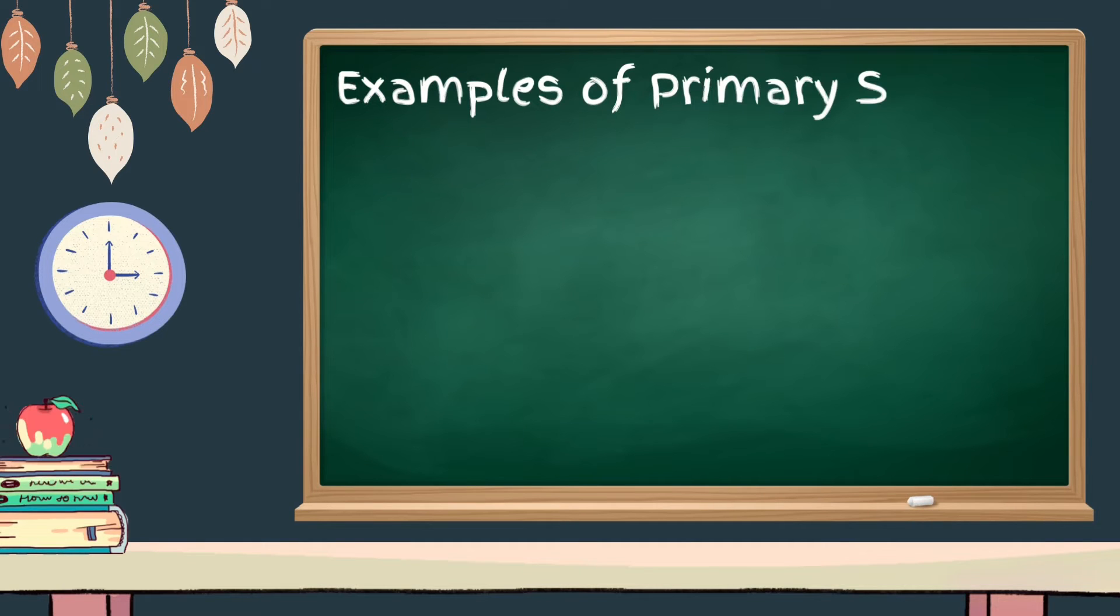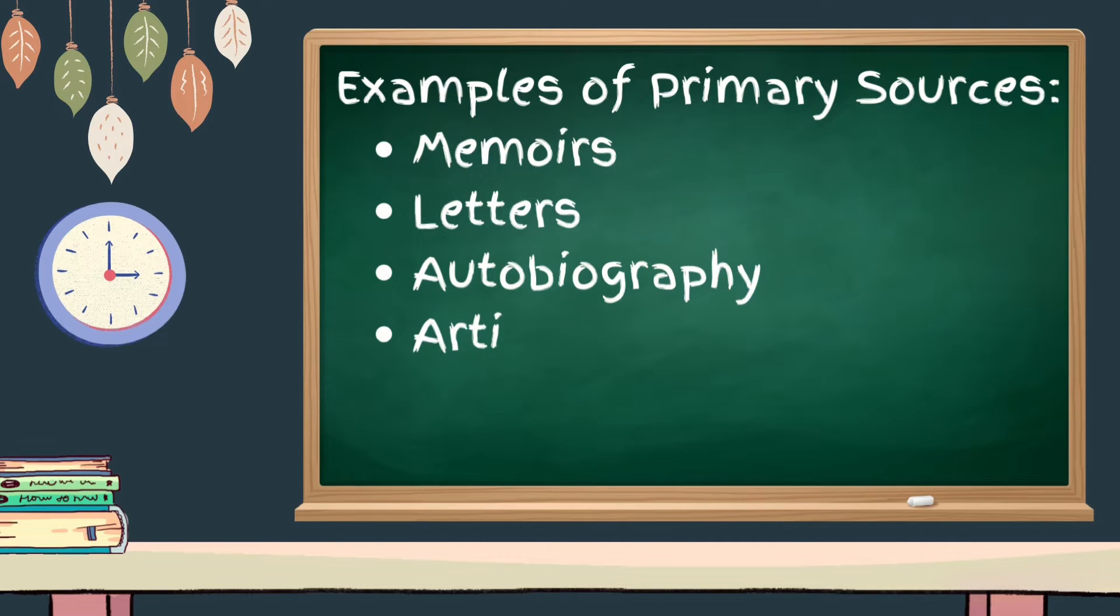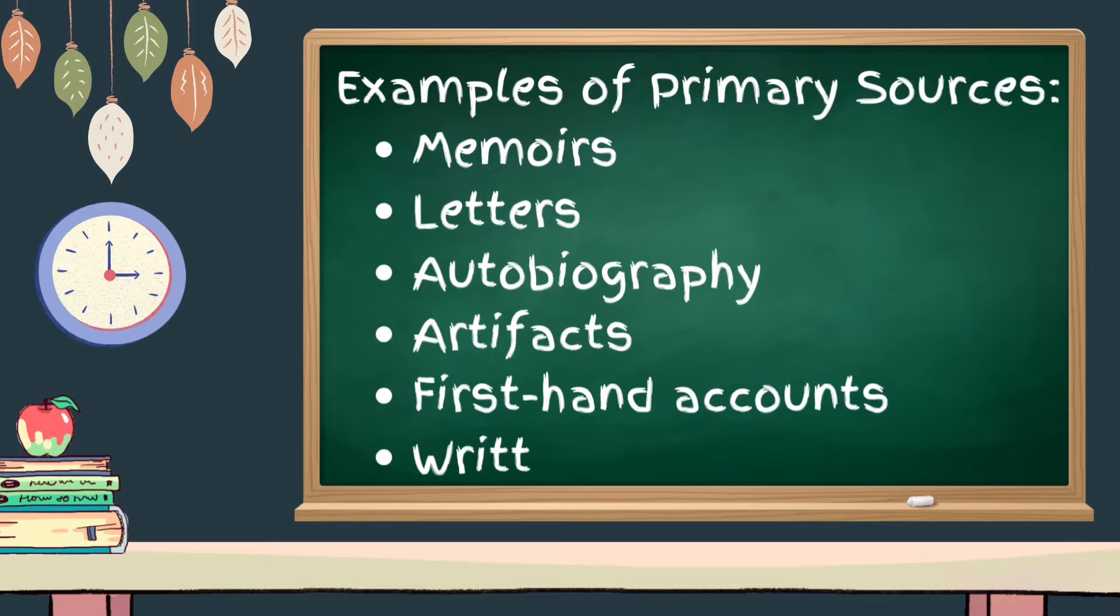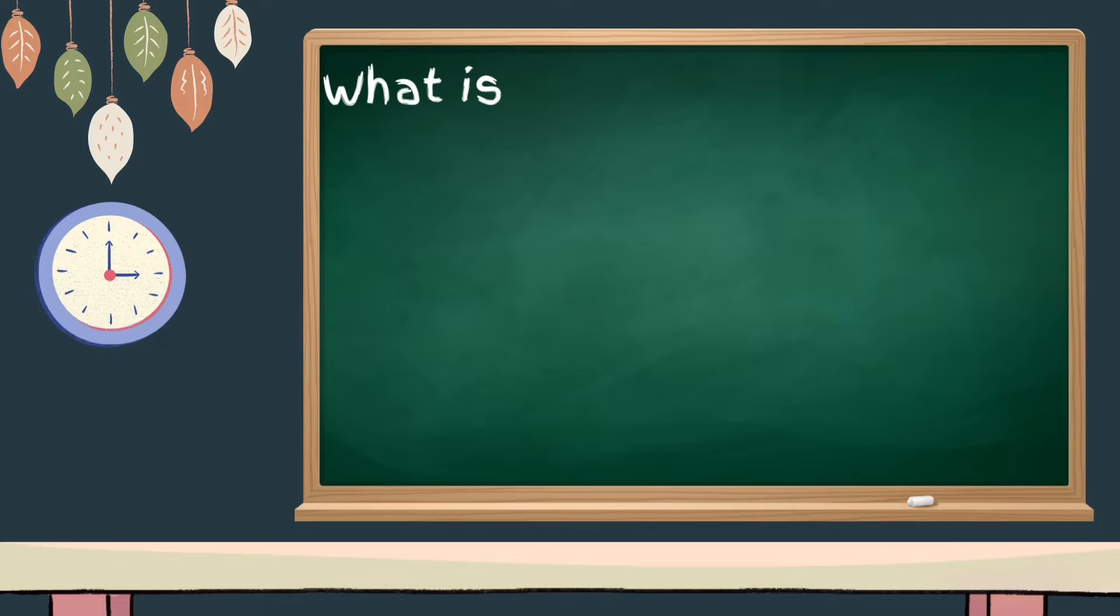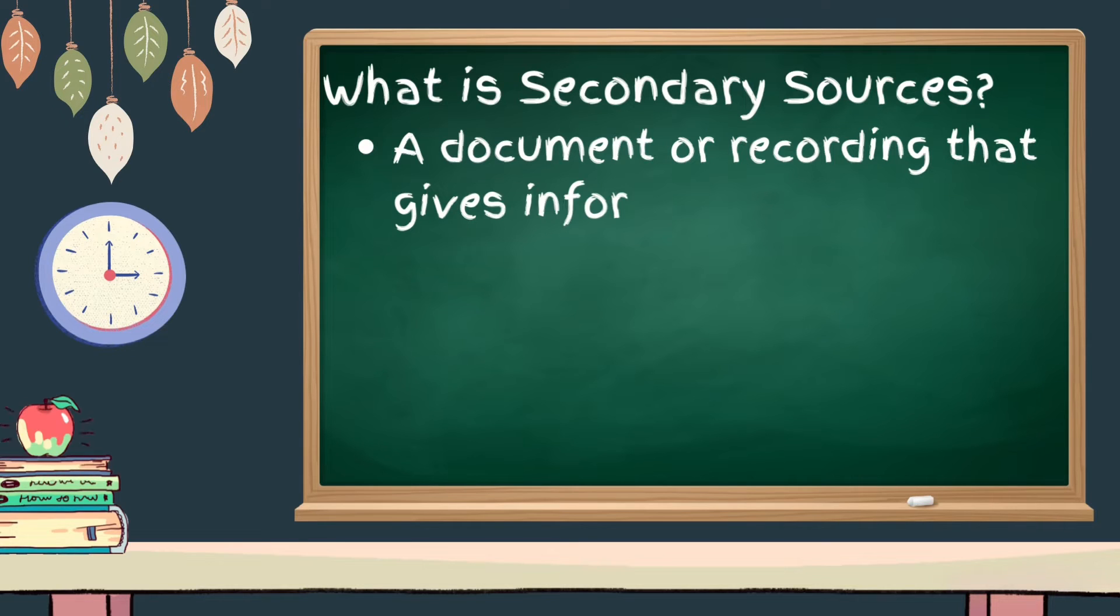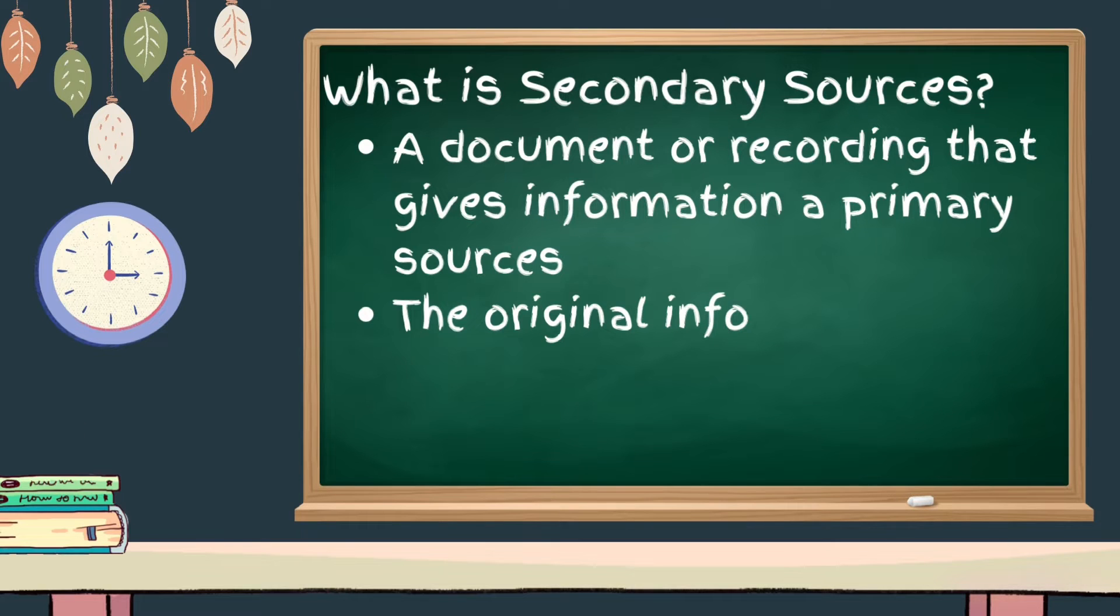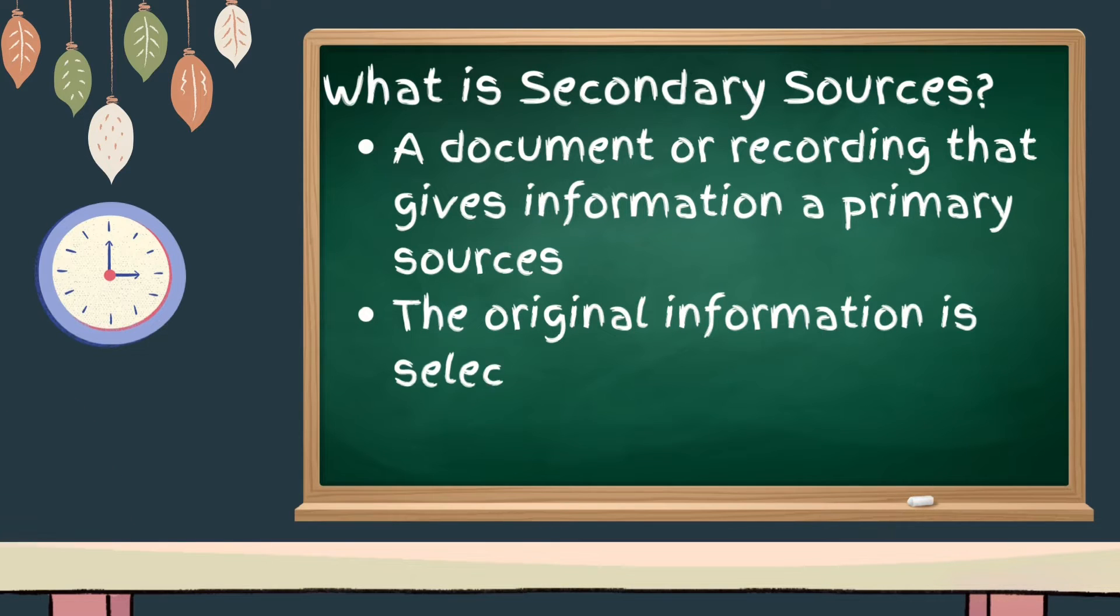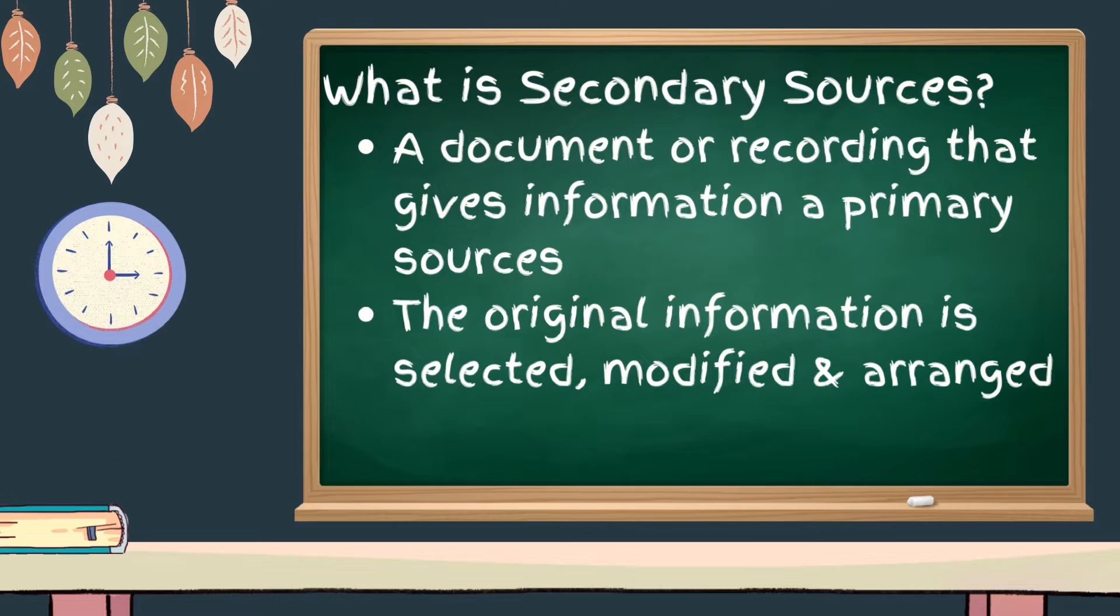Examples of which are memoirs, letters, autobiography, artifacts, first-hand accounts, and written works. What is secondary sources? This is a document or recording that gives information of primary sources. The original information is selected, modified, and arranged in a suitable format.